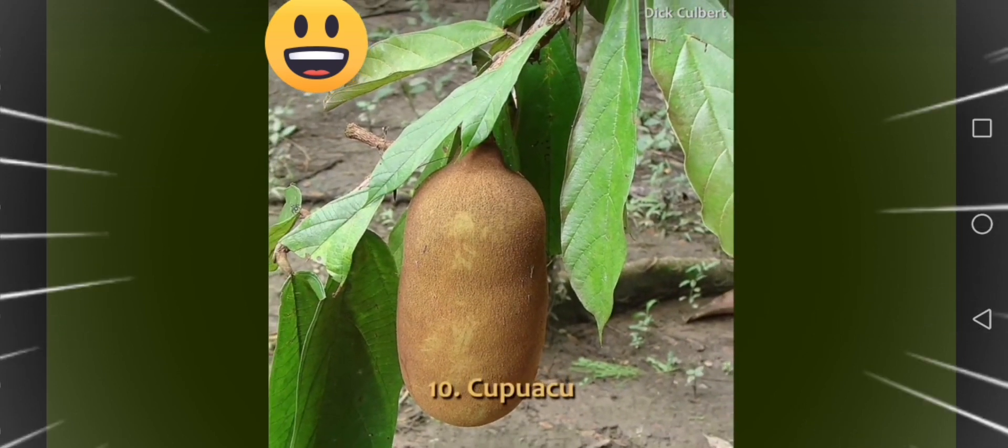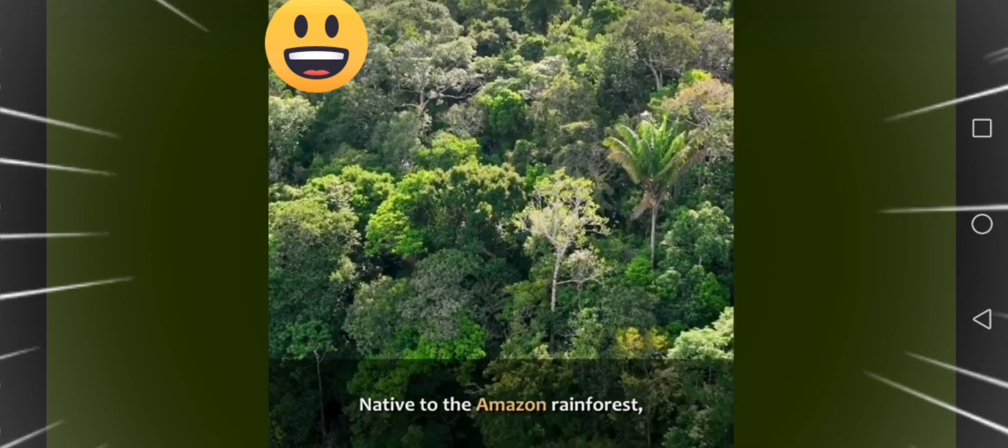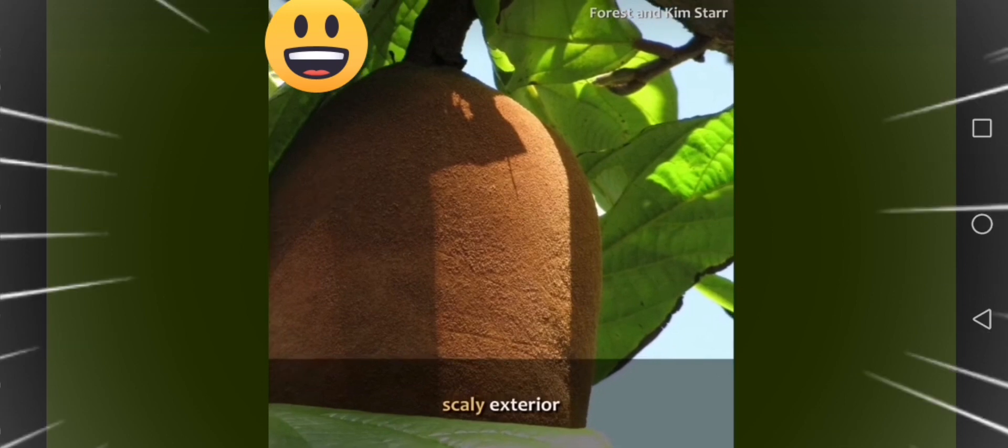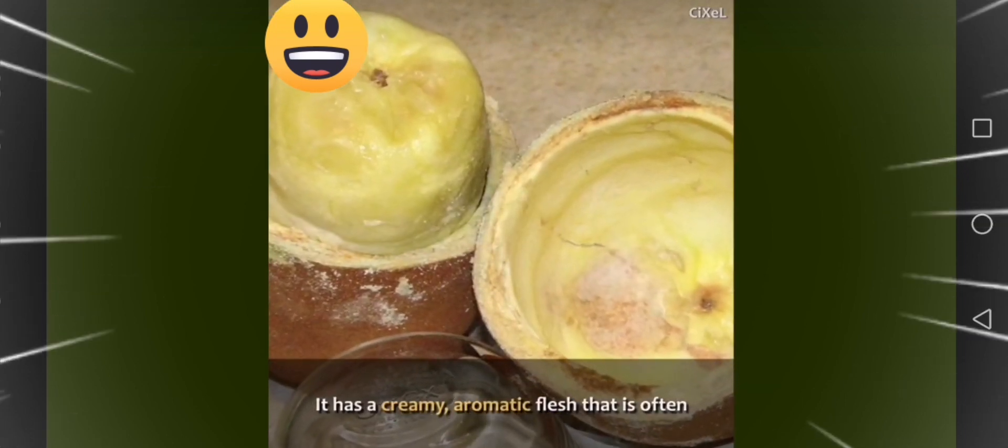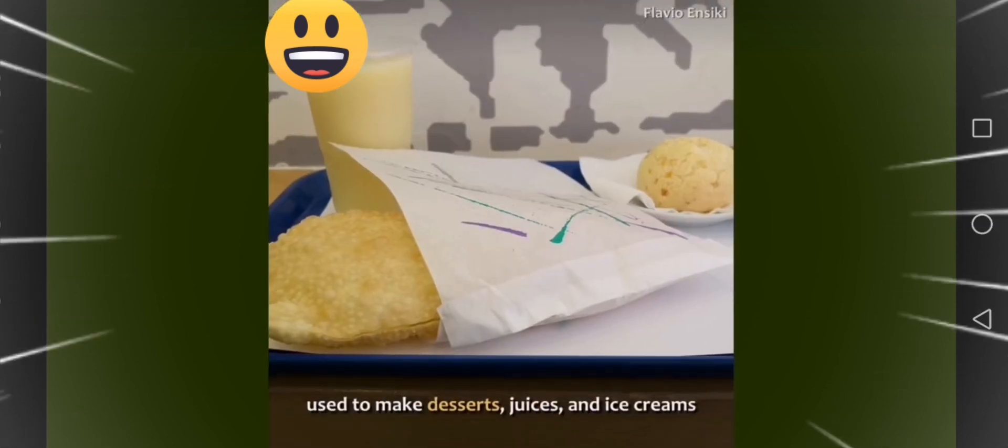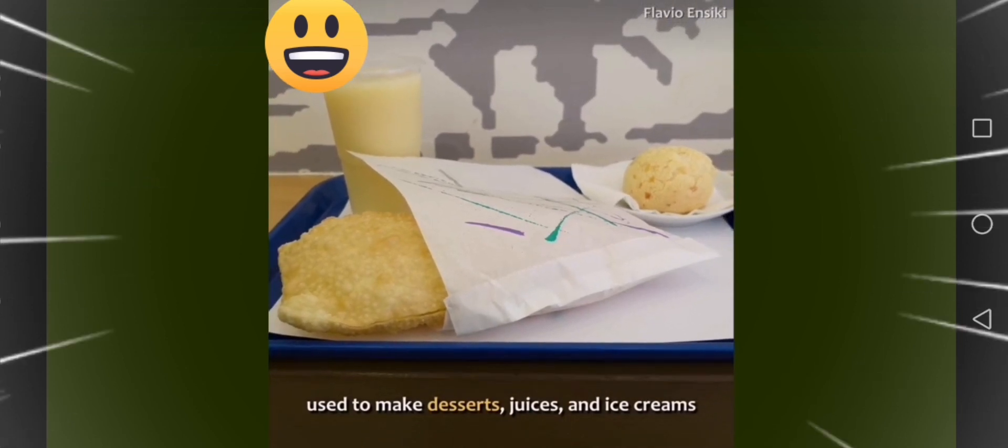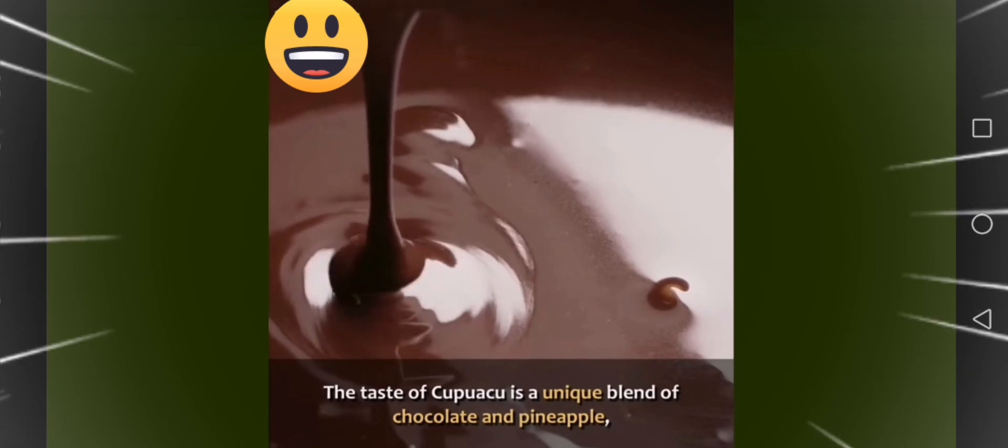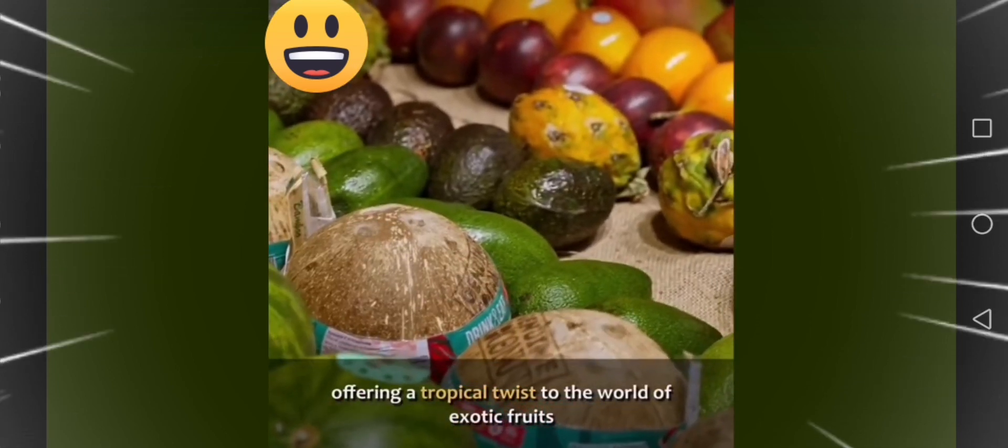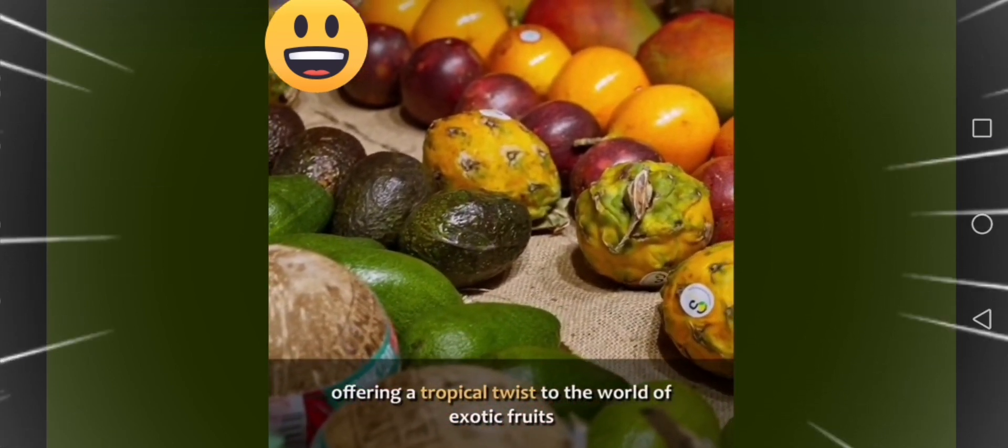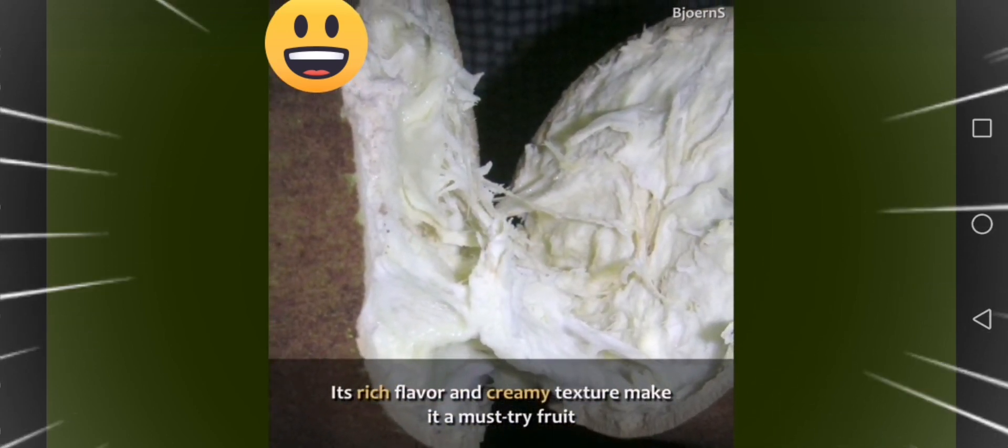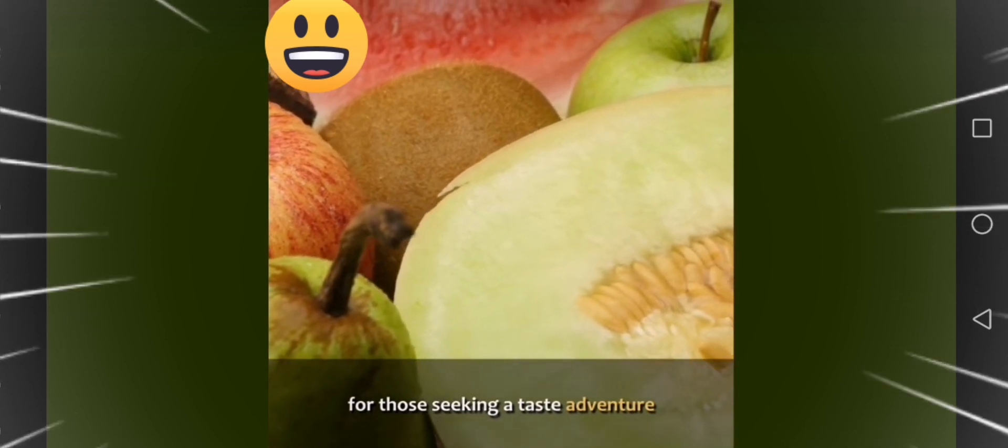Ten, cupuaçu. Native to the Amazon rainforest, the cupuaçu is a large, oblong fruit with a brown, scaly exterior. It has a creamy, aromatic flesh that is often used to make desserts, juices, and ice creams. The taste of cupuaçu is a unique blend of chocolate and pineapple, offering a tropical twist to the world of exotic fruits. Its rich flavor and creamy texture make it a must-try fruit for those seeking a taste adventure.